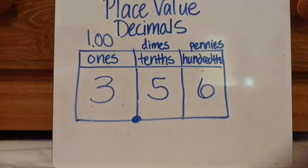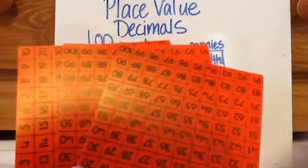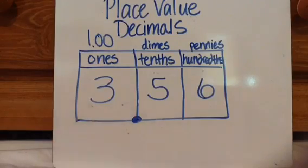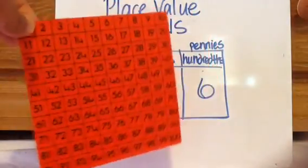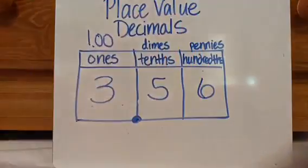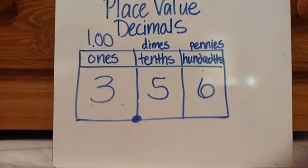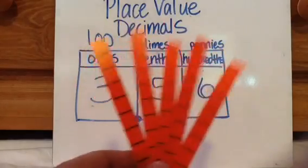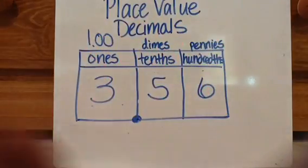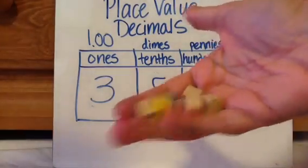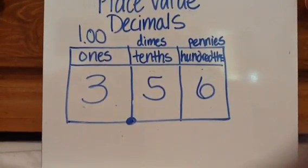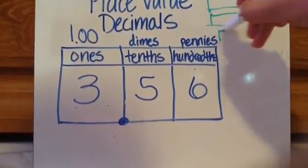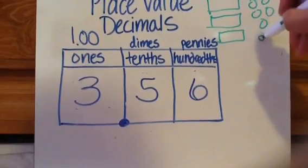Let's look at another one. How do you read it? 3 and 56 hundredths. So that's saying I have 3 ones, which would be these — remember, we talked about this being like $3. $1 is 100 cents, that's why we use this hundreds block. So 3 ones, and then 5 tenths — that's why we're using the ten sticks, because it's like one tenth of a hundreds block. So 5 tenths, and then 6 hundredths, which would be these. For money purposes, it's like saying I have $3, 5 dimes, and then 6 pennies.